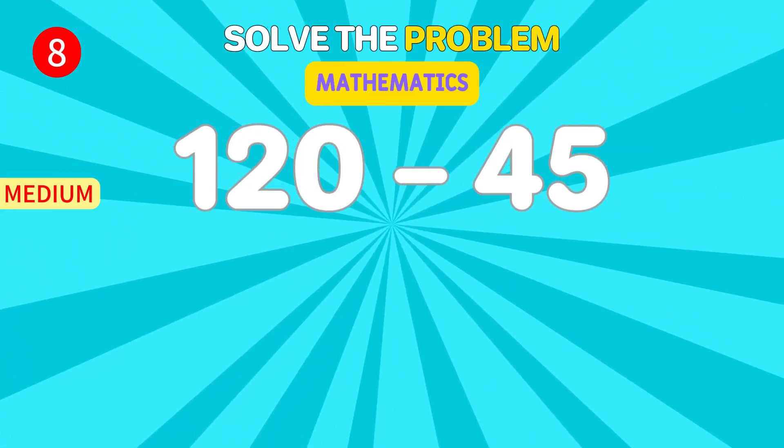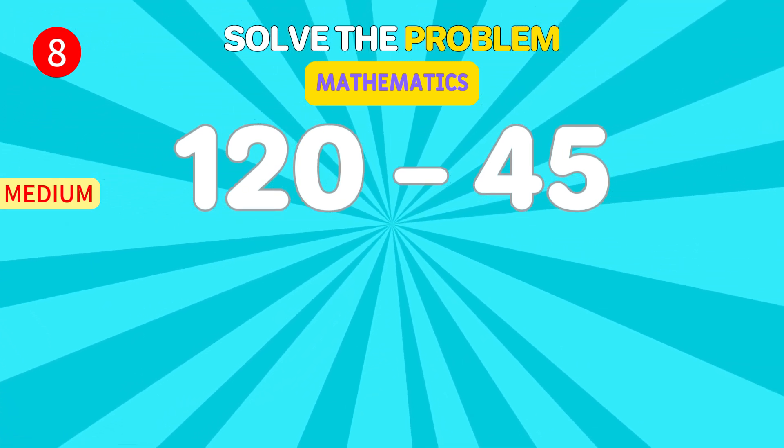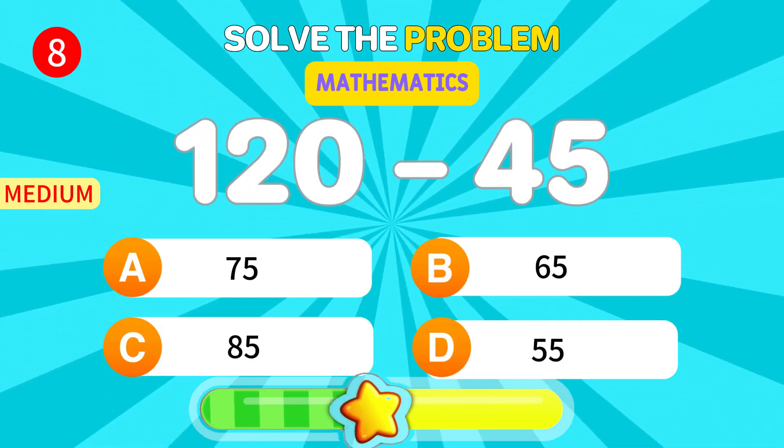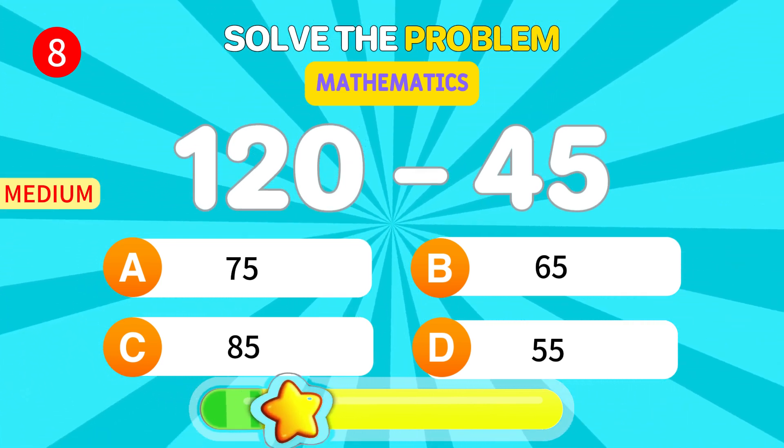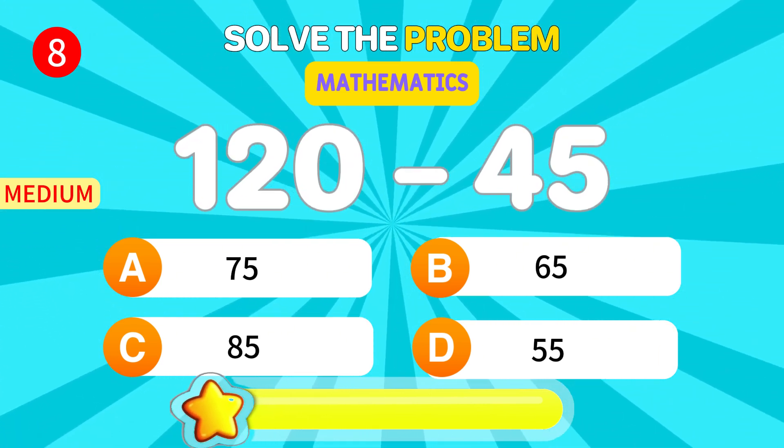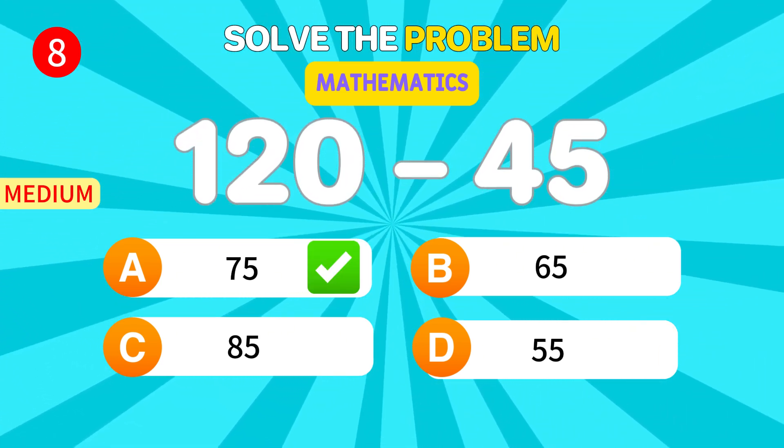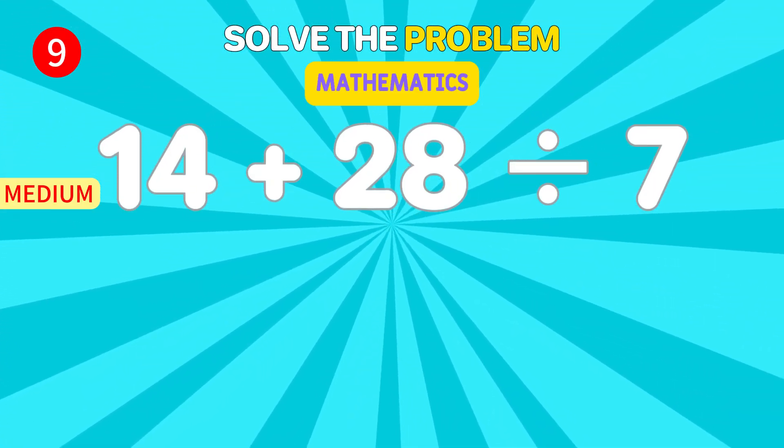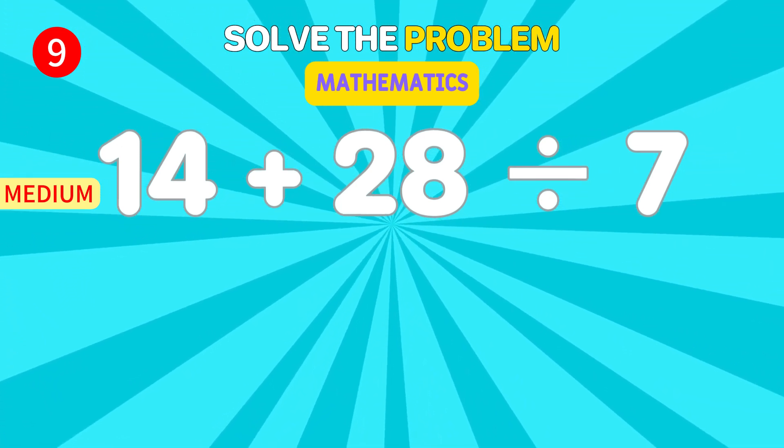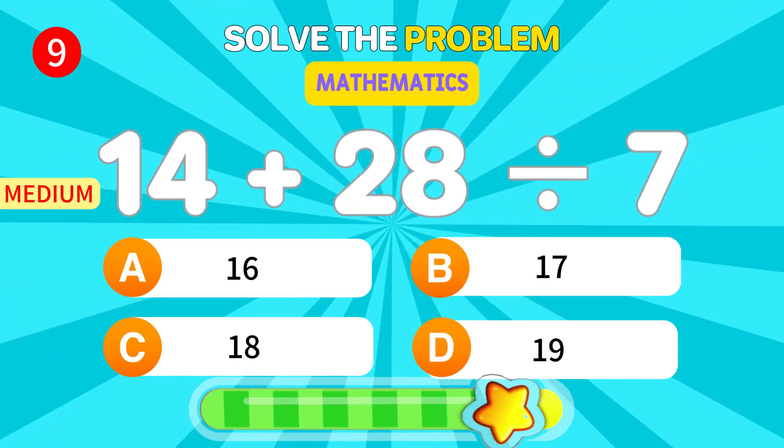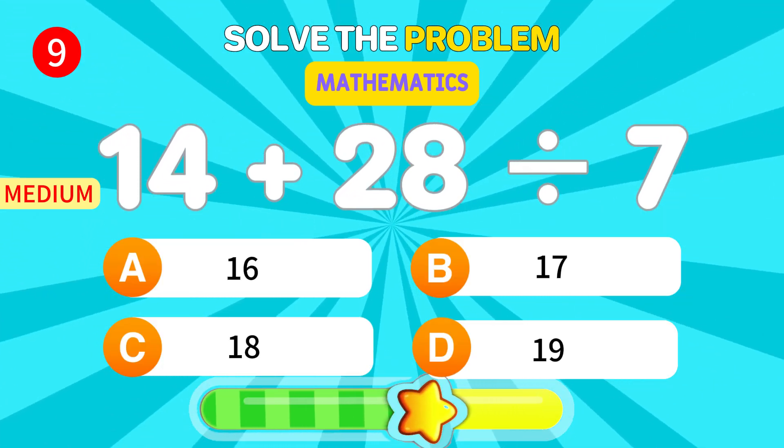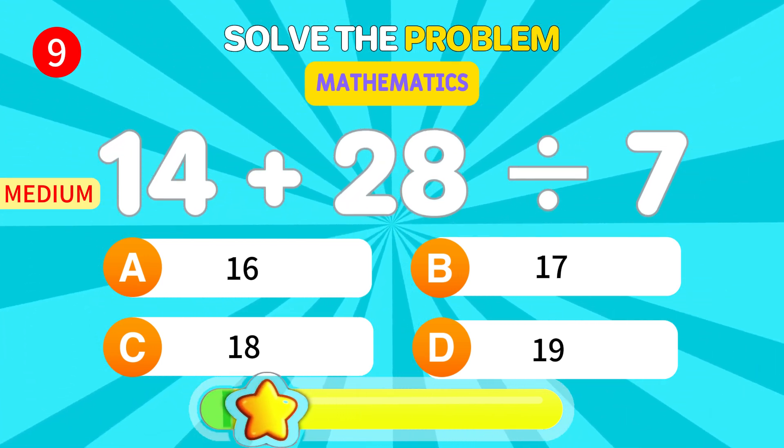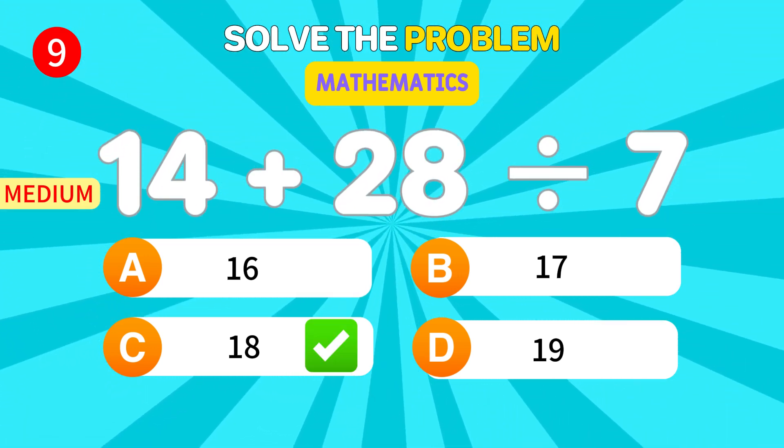What's the result of 120 minus 45? 75. Perfect. Can you solve this? 14 plus 28 divided by 7. 18. Great work.